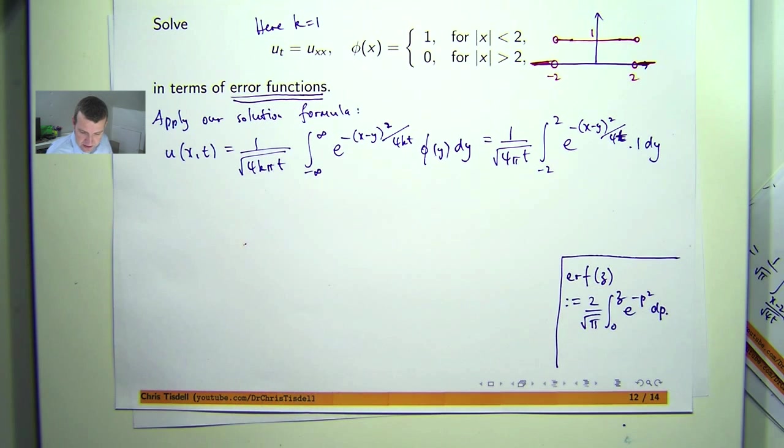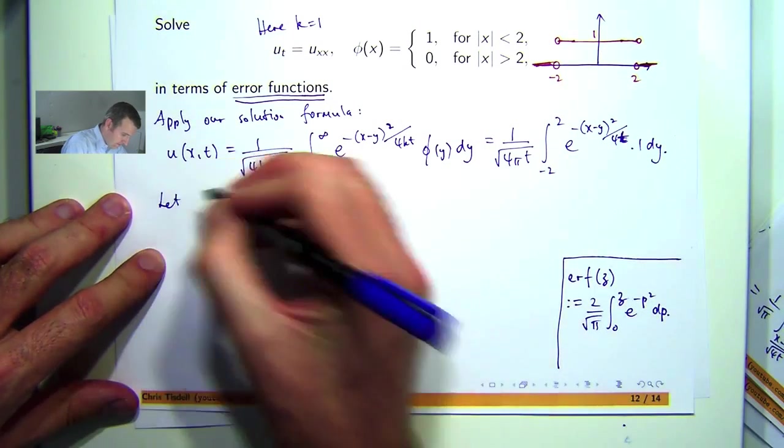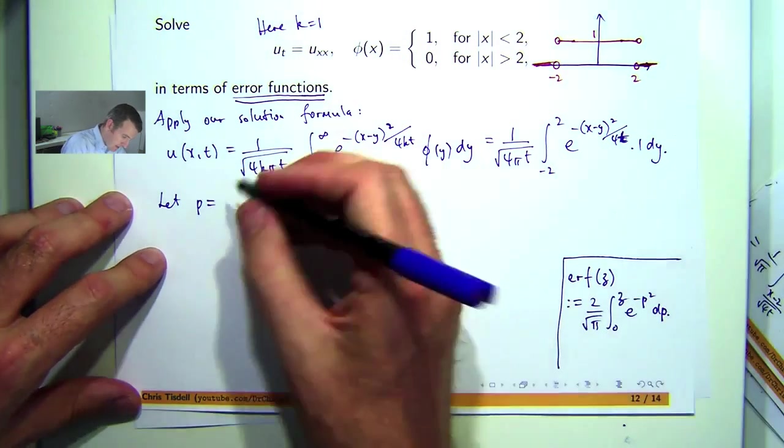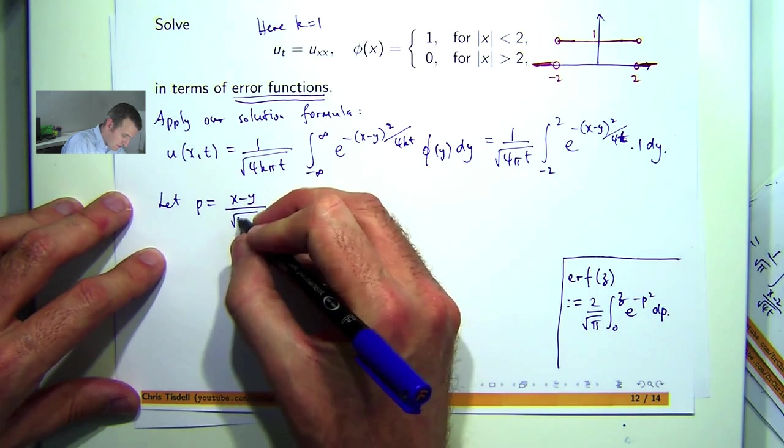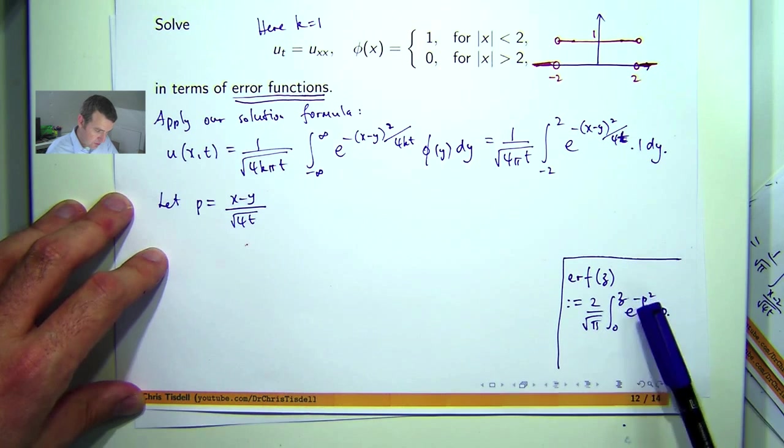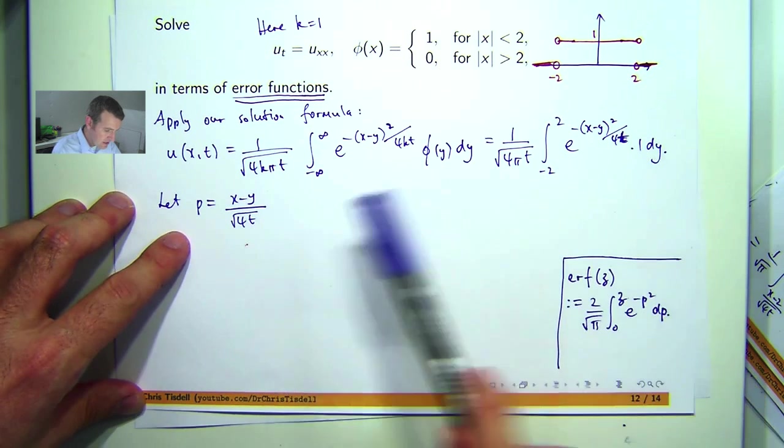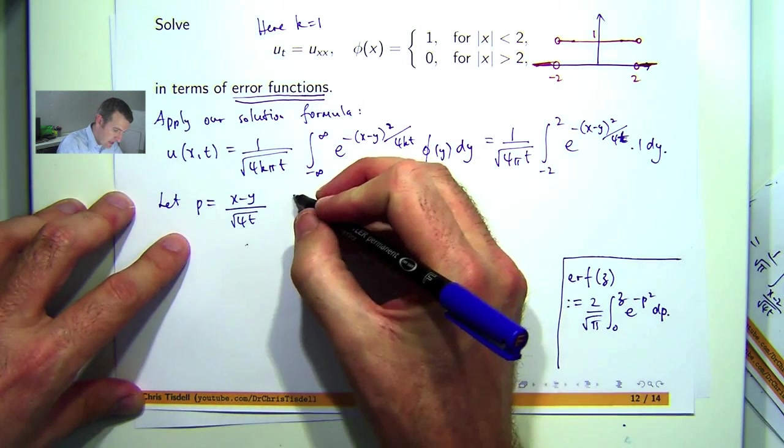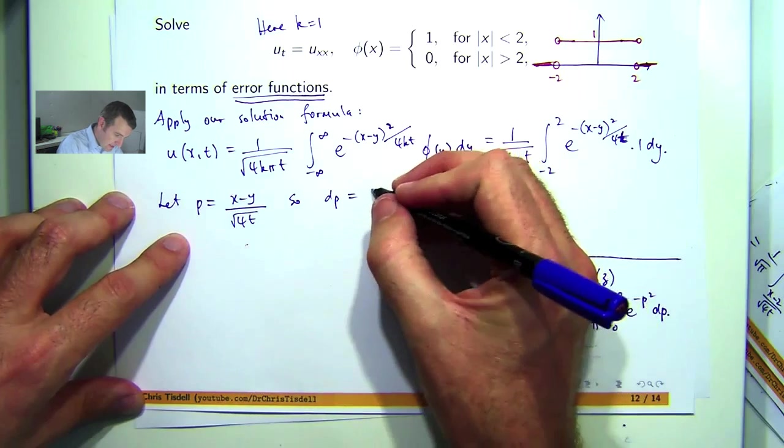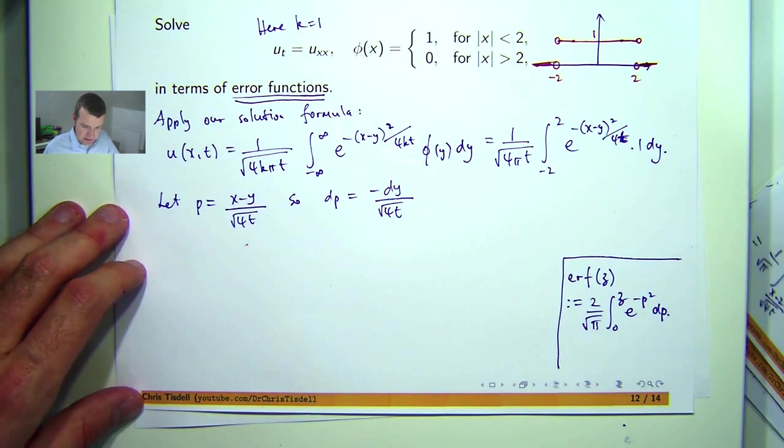So how do we do it? Well, we're going to make a substitution. And you can do it in the following way. Let p equal x minus y all over root 4t. So we're going to get something like a negative p squared up there. So that's looking pretty good. Now remember we're integrating with respect to y here. So if we treat x and t as constants essentially, and we work out dp, it's going to be negative dy over root 4t.